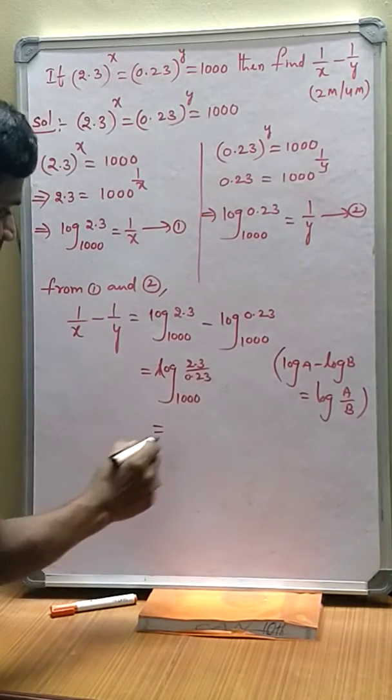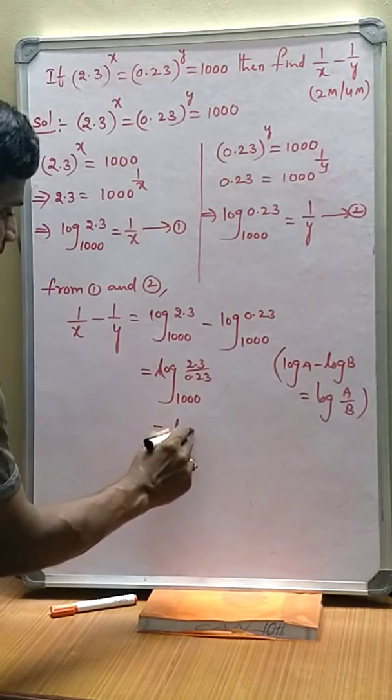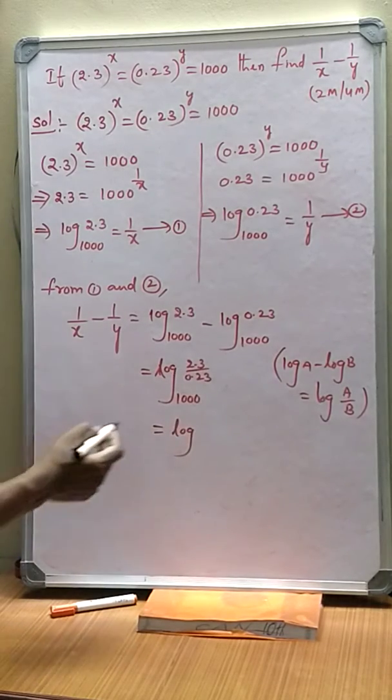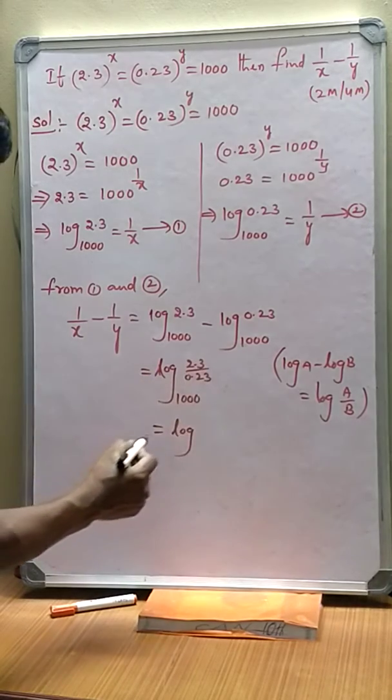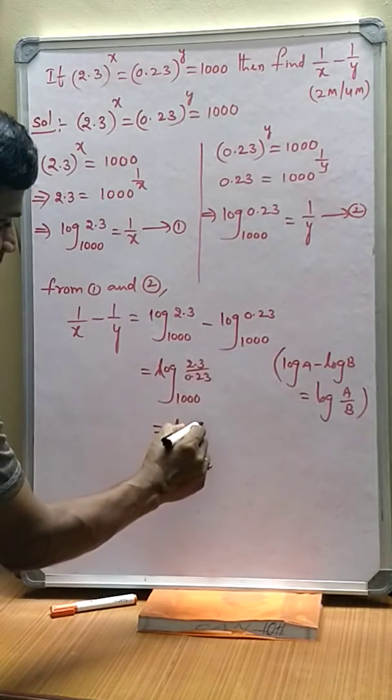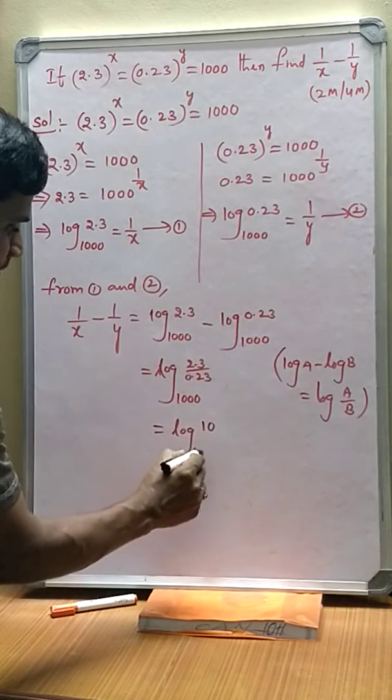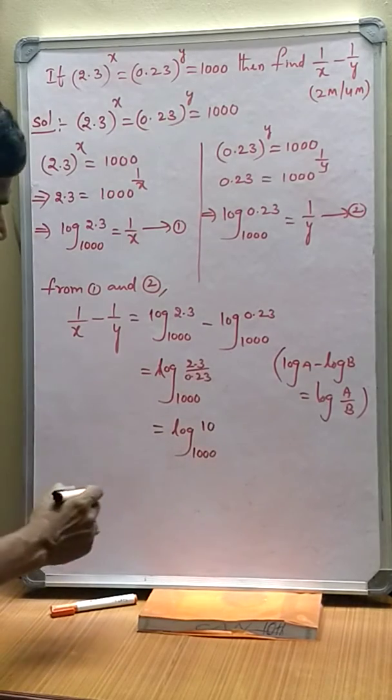Which is again equal to log, see, 2.3 divided by 0.23, so this value becomes 10 base 1000.